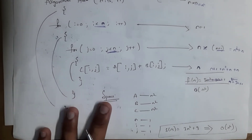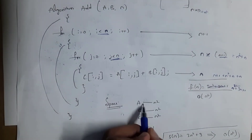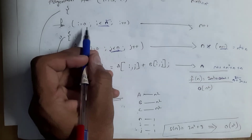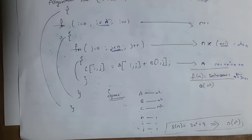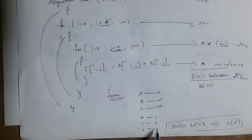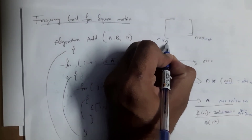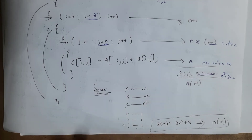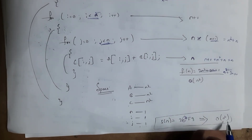For space complexity of the matrix algorithm, there are three matrices: a, b, and c, and three scalar variables: n, i, and j. n, i, and j are assignment variables, each with frequency count one. Each matrix a, b, and c is a square matrix with n rows and n columns, so each has n squared elements. Total space is three times n squared plus three, which is 3n squared plus 3. The highest degree is 2, so space complexity is O(n squared).